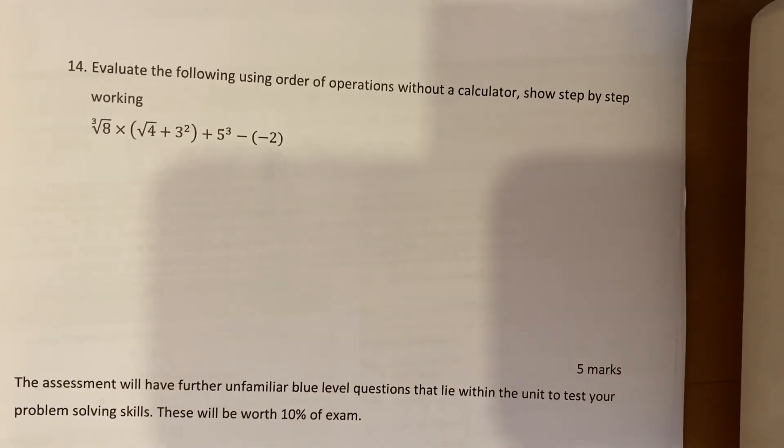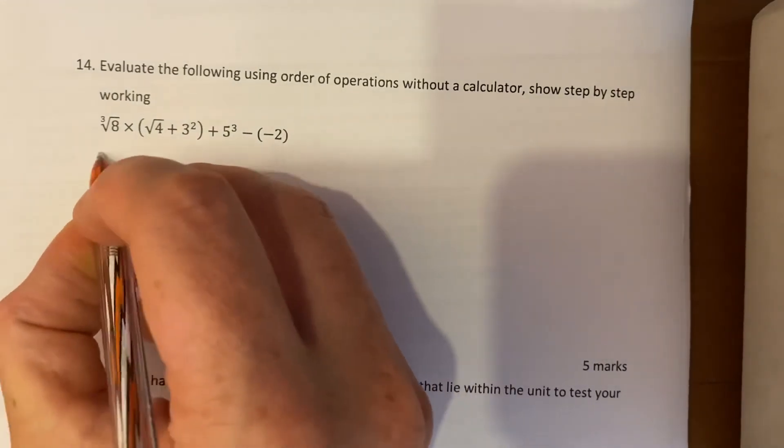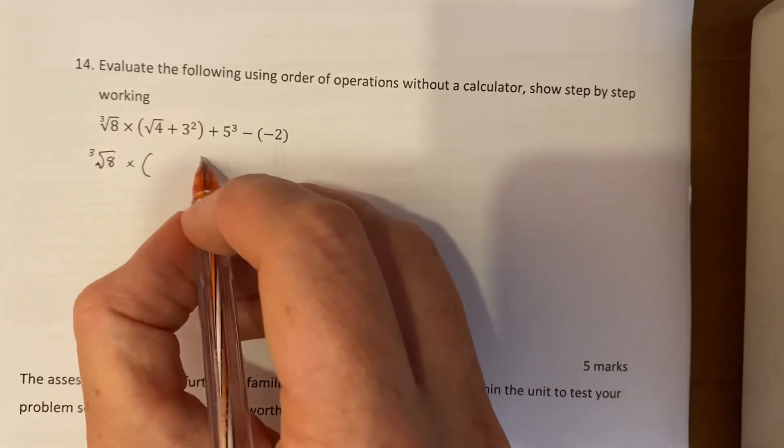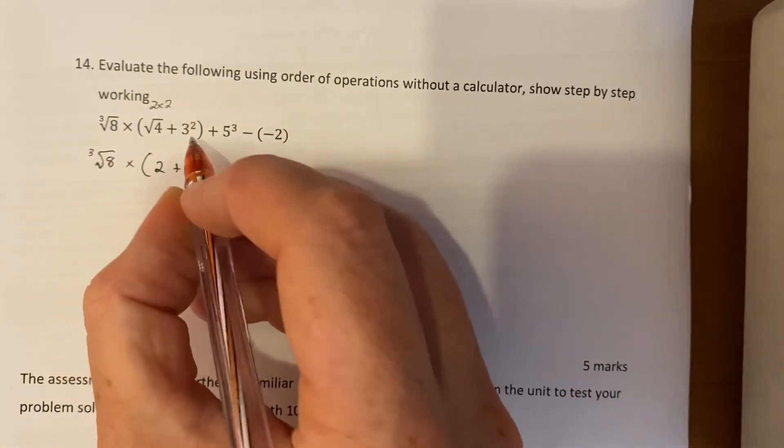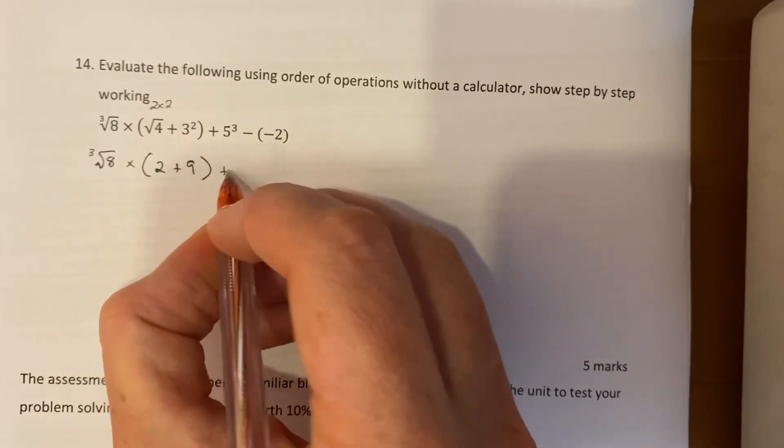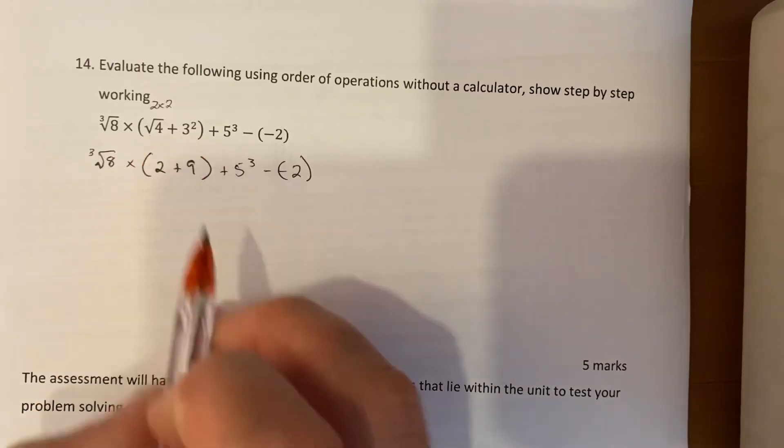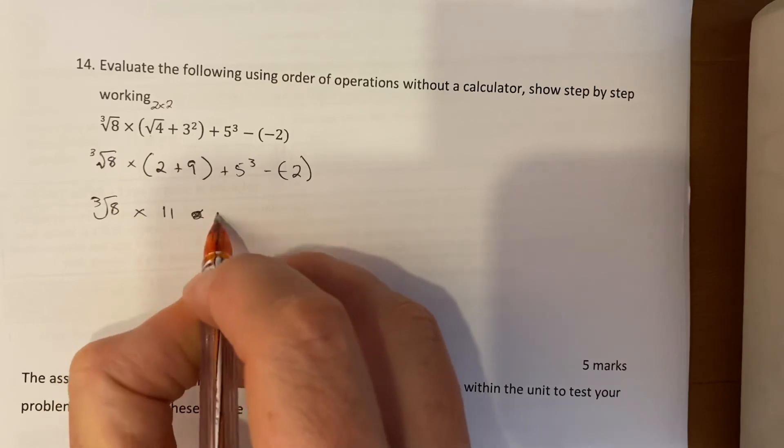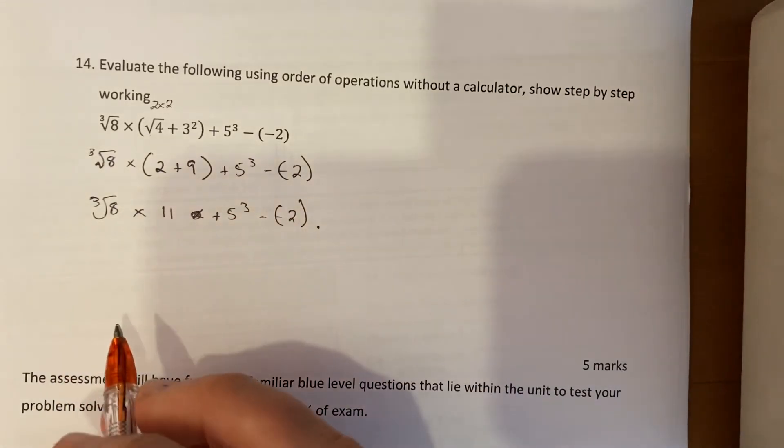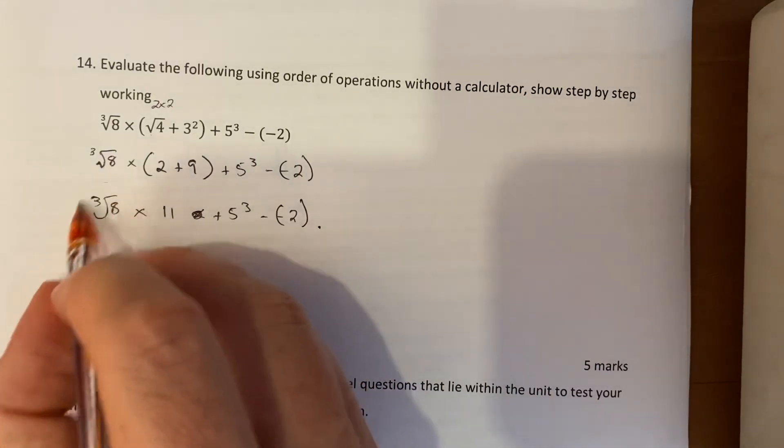And the last question - wow, tricky one. Evaluate the following using order of operations again. So brackets first, then exponents. So brackets first - I'll leave that exponent there. What's in the brackets with a square root of 4? Well what number by itself gives 4? We know 2 times 2 gives 4, so the answer must be 2 plus - and the other exponent here, 3 squared is 9. So I haven't actually answered what's in the brackets but I've simplified it, and now I'm going to answer the addition because the exponents need to be dealt with first. 2 plus 9 is 11, plus 5 cubed minus minus 2. Next thing up - so BEDMAS, brackets are done, now exponents. That's an exponent, that's an exponent.